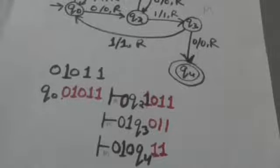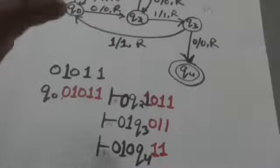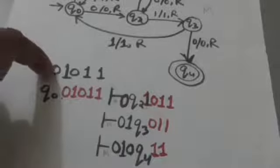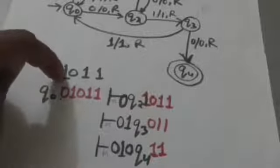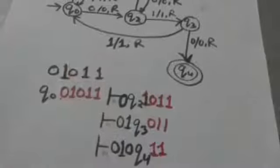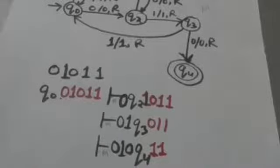Notice that the Turing machine M has not read all input symbols of the string 0 1 0 1 1, and yet it has accepted this string.